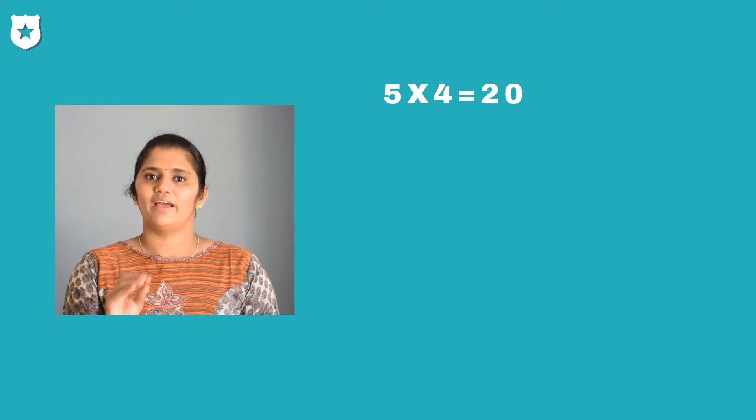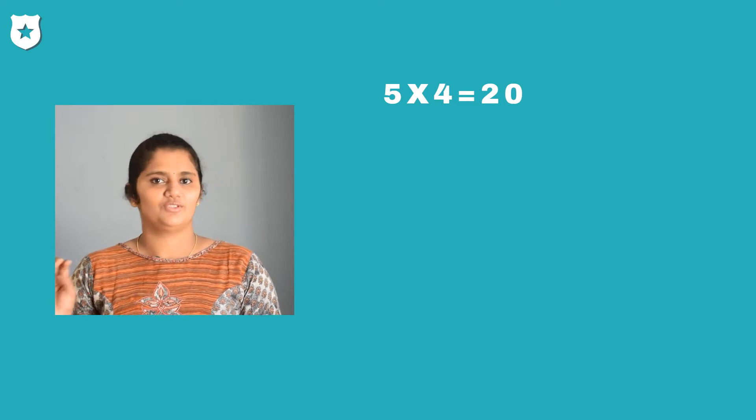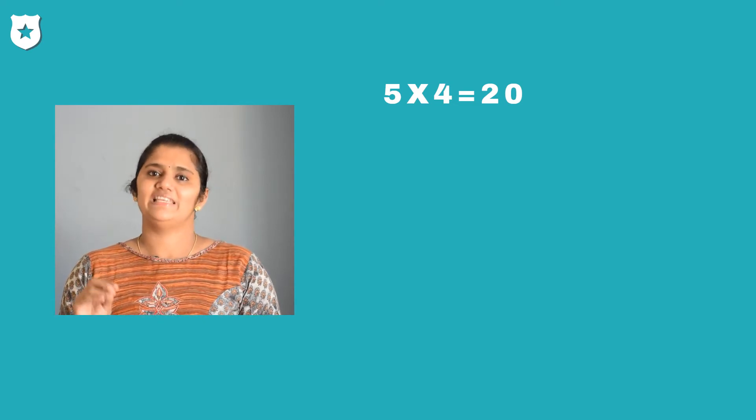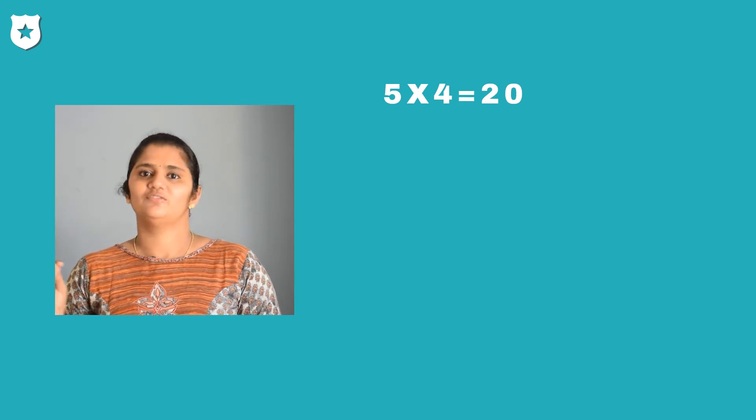Here 5 and 4 are the factors of 20. 20 is the multiple of 5 and 4.